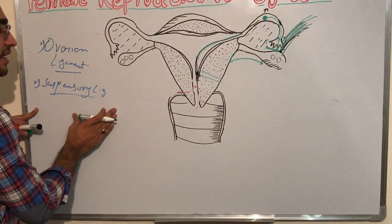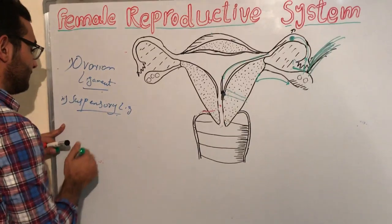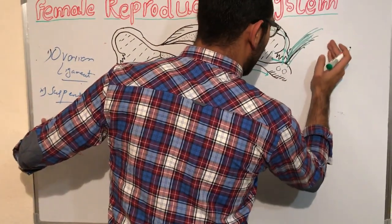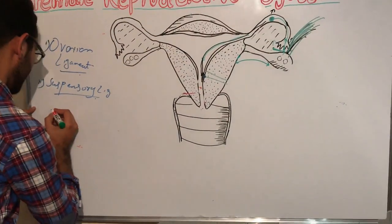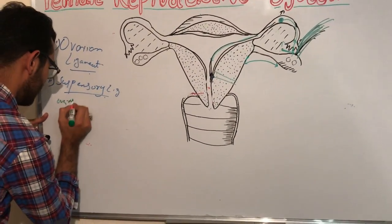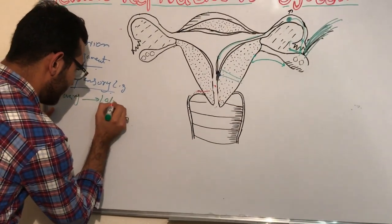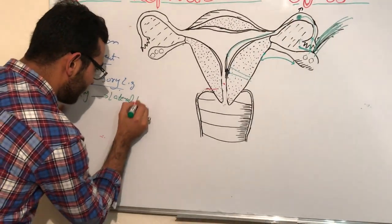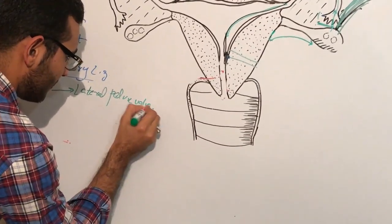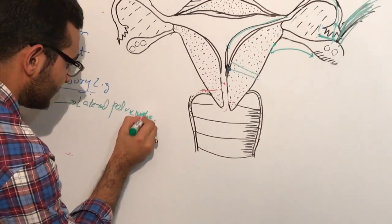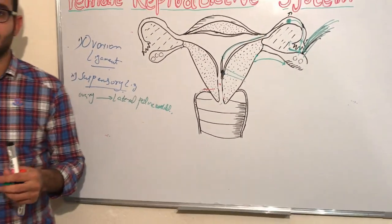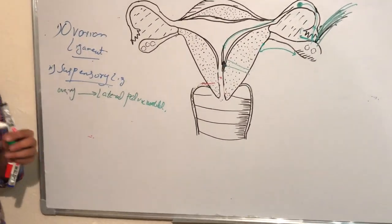This ligament runs from the ovary to the lateral wall of the pelvis, and it is known as the suspensory ligament or infundibulopelvic ligament. It causes the suspension of the ovary.